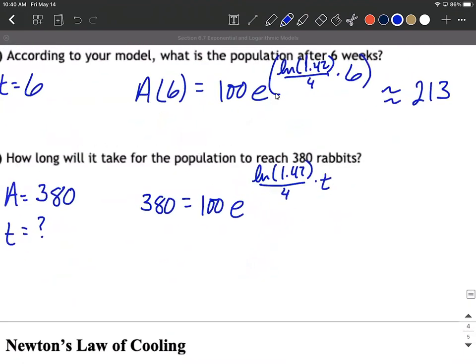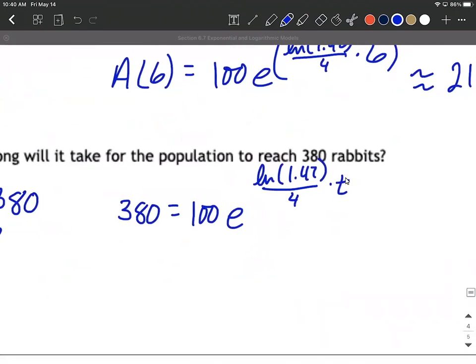Again we have an exponential equation, t is up in the exponent here. So the first thing I'm going to do is try to isolate the e to the power and move the 100 to the other side. So divide both sides by 100. 3.8 equals e to that power, natural log of 1.42 divided by 4 times t.